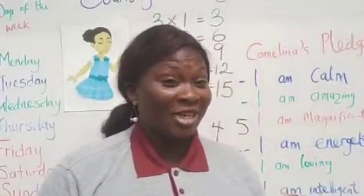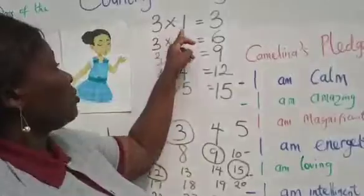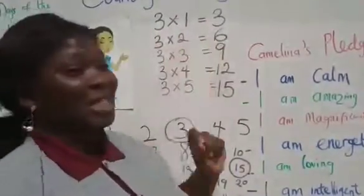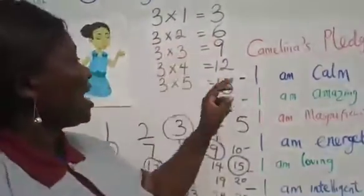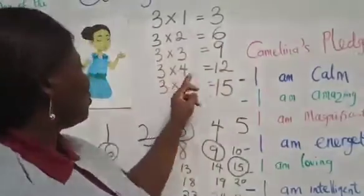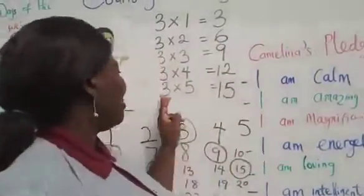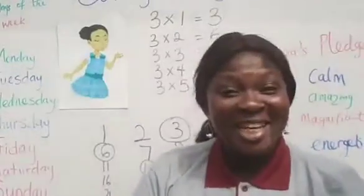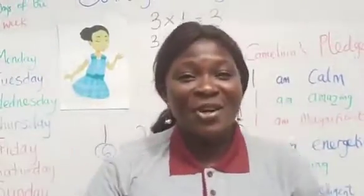So children, let's recite our three times table together. Three times one — three. Three times two — six. Three times three — nine. Three times four — twelve. Three times five — fifteen. Did you enjoy the class? I did!